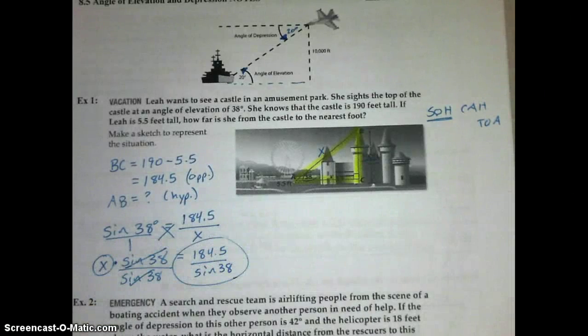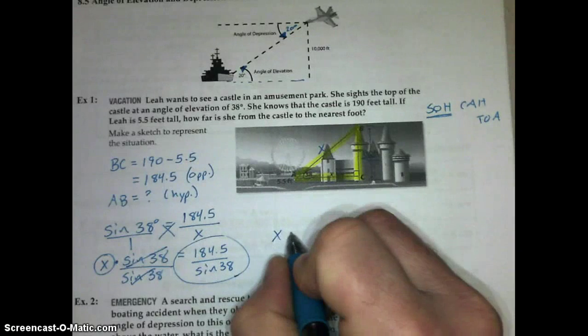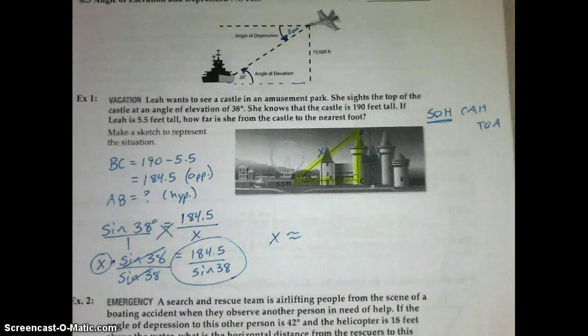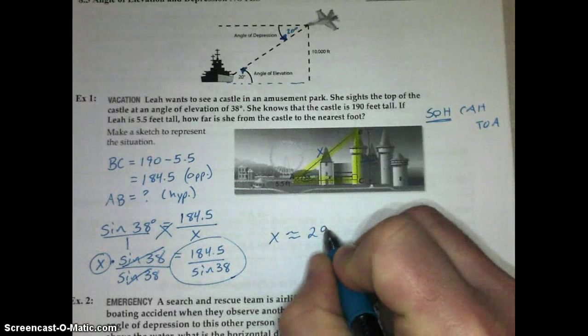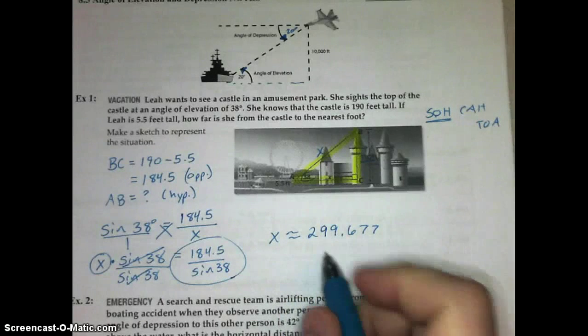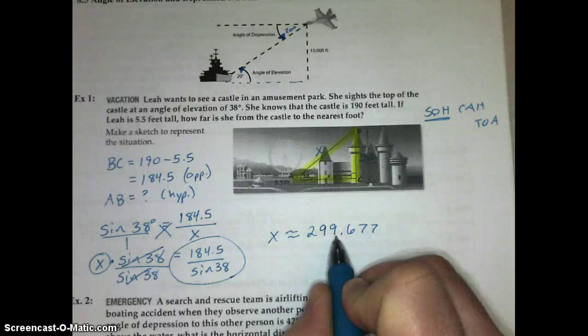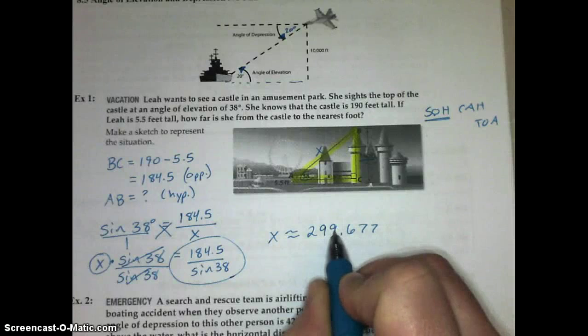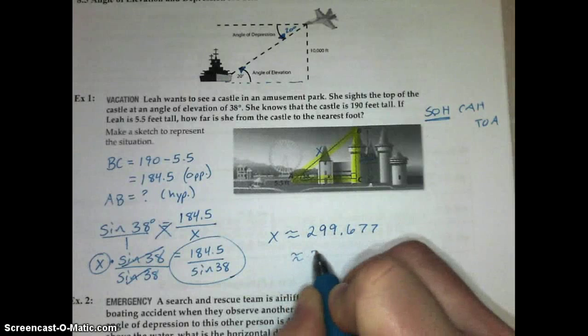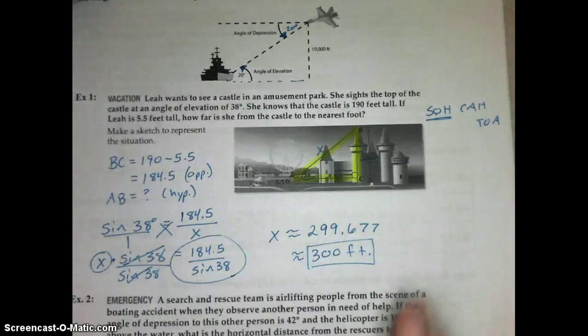X equals that ratio, so we're going to go ahead and round that out to the nearest foot. We're going to do 184.5 divided by sine of 38, and that gives approximately 299.677. If I round that to the nearest foot, this is a 6, we have to round this 9 up. Well, that means we're actually rounding 99 up, which means we're rounding 299 up to approximately 300 feet. So, that was an angle of elevation.